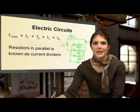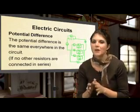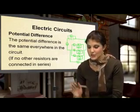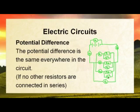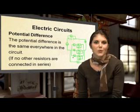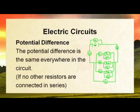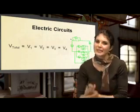Now let's look at potential difference in a parallel circuit. Like current was the unique thing in a series circuit because it stays the same, potential difference is the unique thing in a parallel circuit — it stays the same across each one of our resistors. V1 across the first resistor equals V2, which equals V3, and equals the total potential difference across this combination. Should there be no other resistors in the series part of the circuit, it will also equal the total potential difference across the battery.